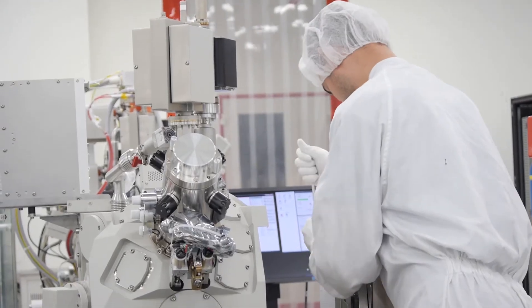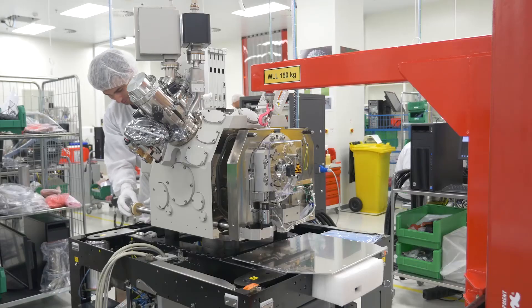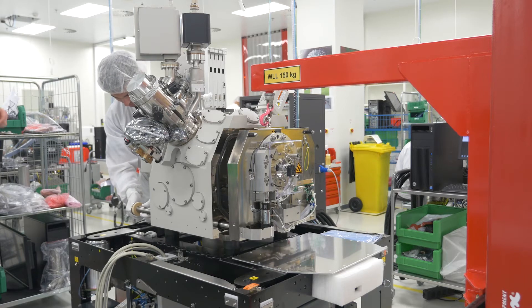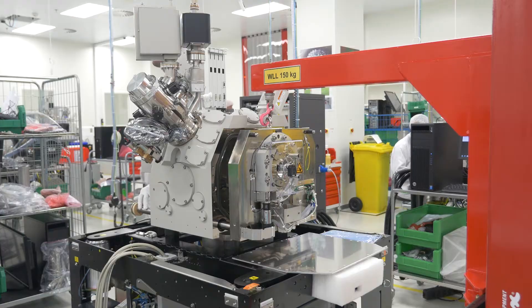Critical operations include the mechanical setting and centering of individual parts of the optical system with a precision of thousands of millimeters. Here they work literally in kid gloves.